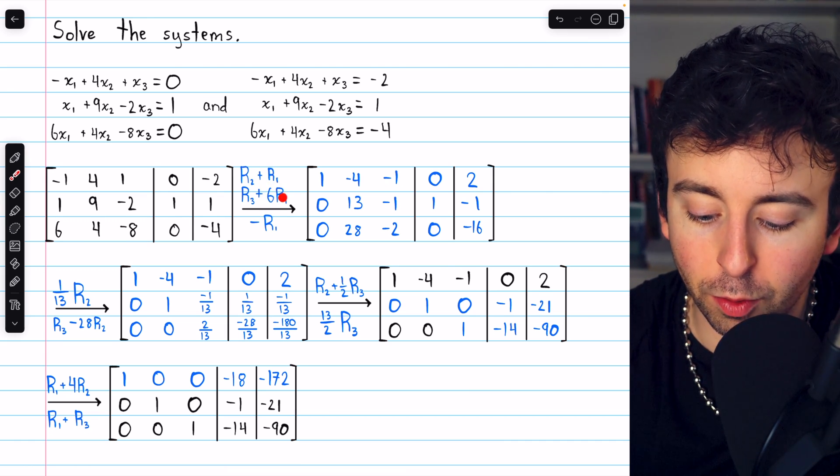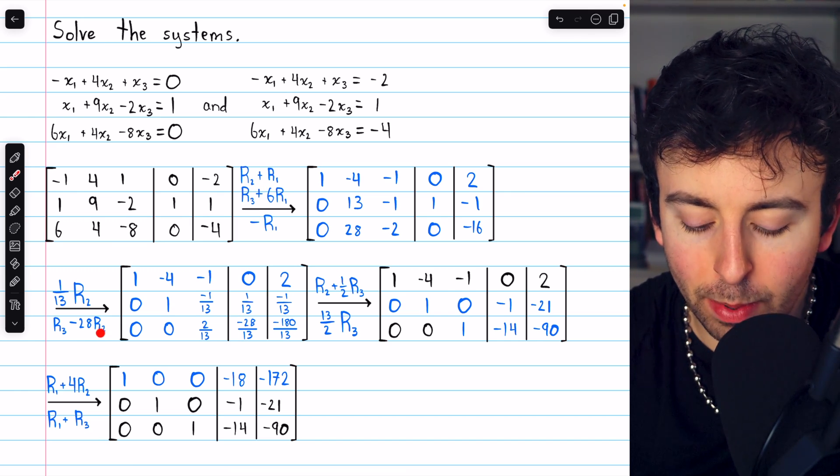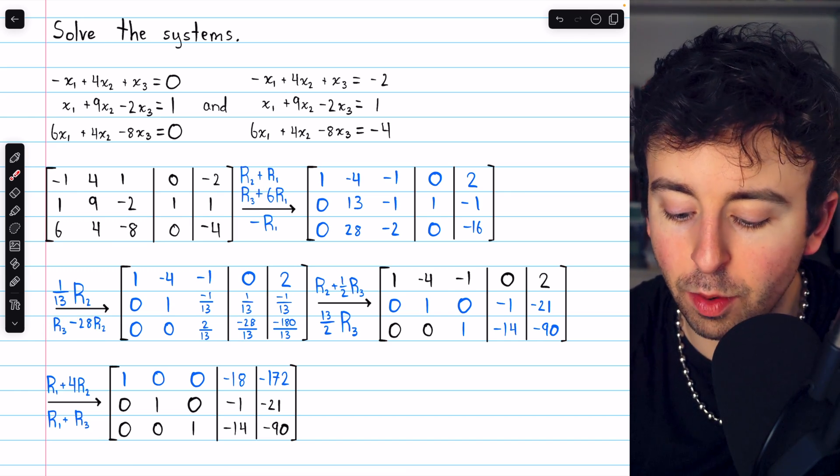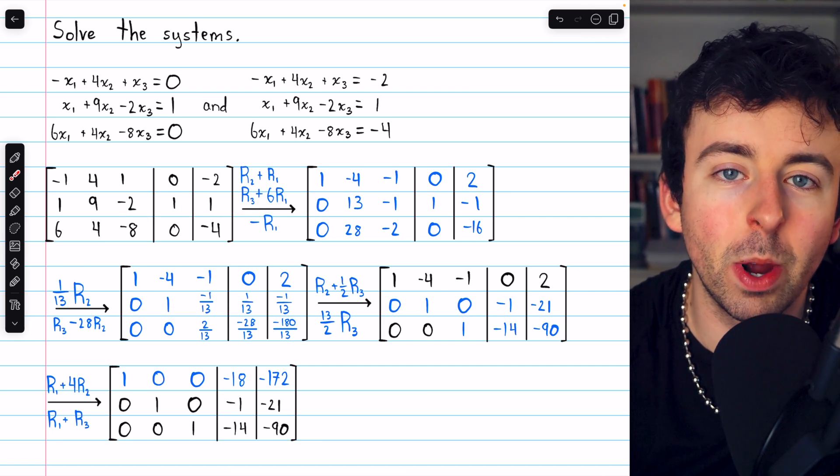For example, 6 copies of row 1 are added to row 3. 28 copies of row 2 are subtracted from row 3. I won't walk you through this whole thing. Hopefully you understand Gauss-Jordan elimination at this point.